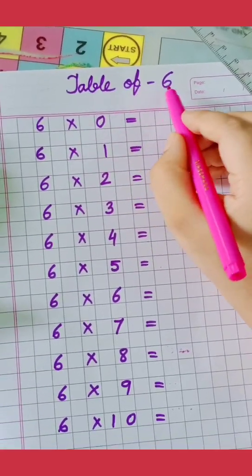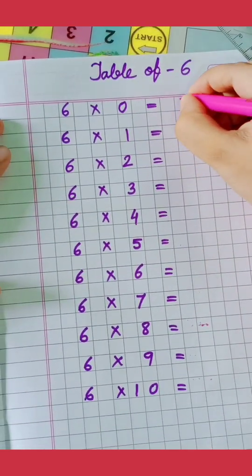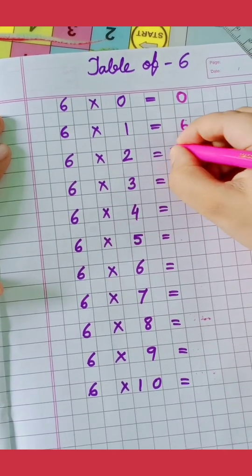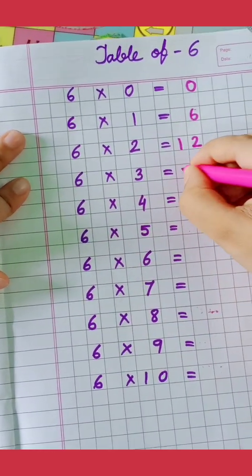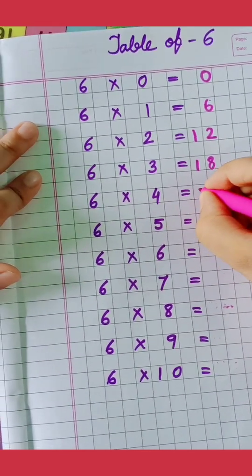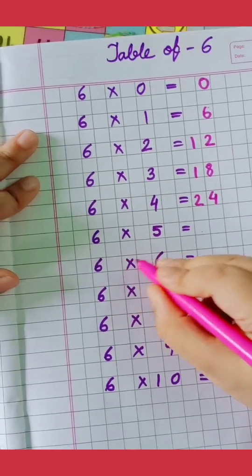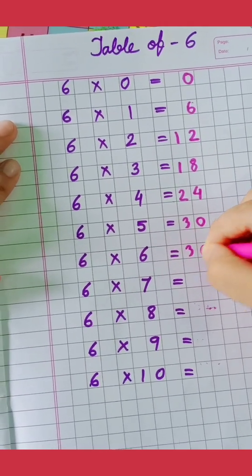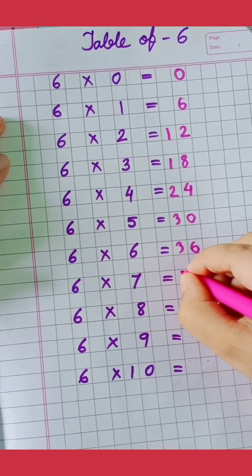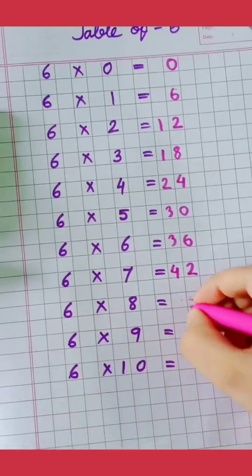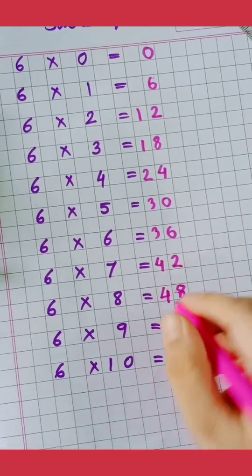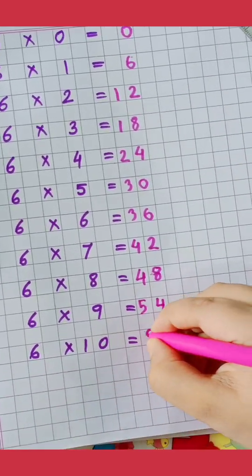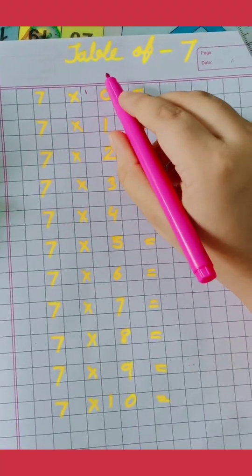Table of 6. 6 0's are 0, 6 1's are 6, 6 2's are 12, 6 3's are 18, 6 4's are 24, 6 5's are 30, 6 6's are 36, 6 7's are 42, 6 8's are 48, 6 9's are 54, 6 10's are 60.